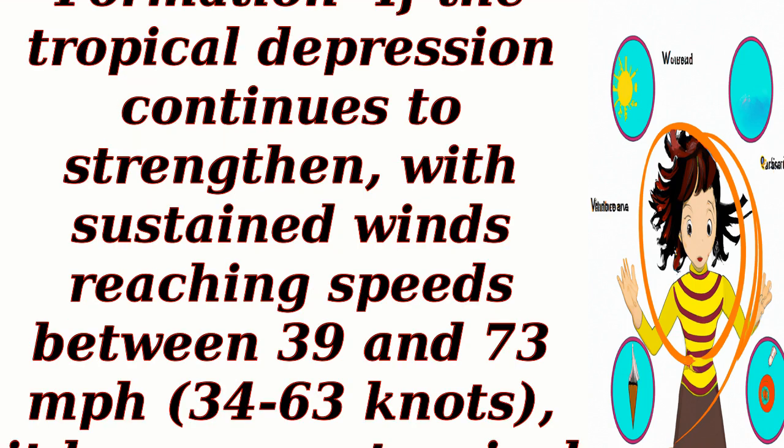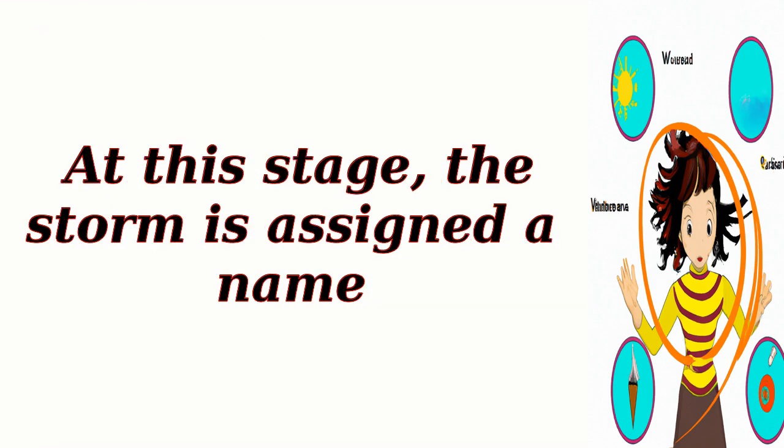Tropical storm formation: if the tropical depression continues to strengthen, with sustained winds reaching speeds between 39 and 73 miles per hour (34 to 63 knots), it becomes a tropical storm. At this stage, the storm is assigned a name.